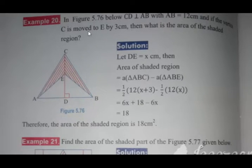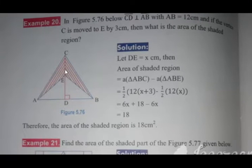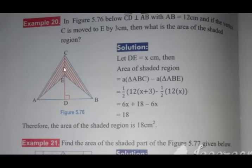If the vertex C is moved 60 cm, what is the area of the shaded region? This is the part of the area in AC.